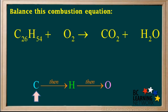So we'll start with C. There are 26 carbons on the left side. And since CO2 has one carbon atom, we'll write 26 here. So there are now 26 carbons on the right side. So carbon atoms are balanced.